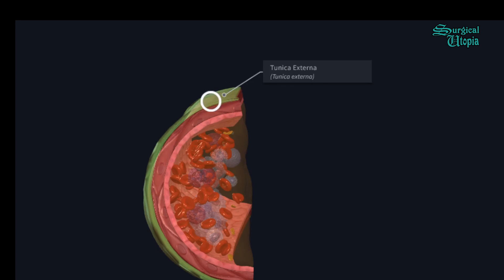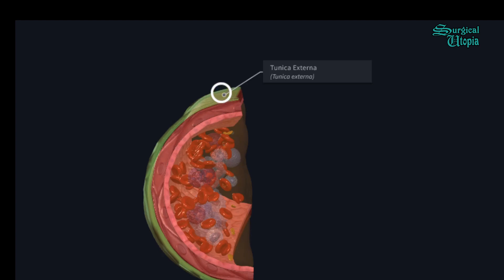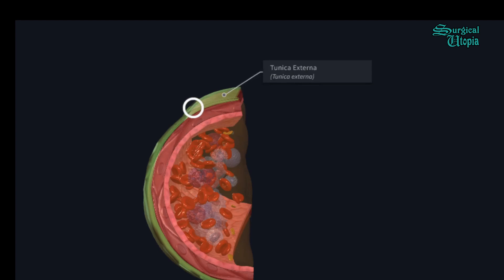It also contains a network of autonomic nerve fibers called the nervi vasorum, which is responsible for vasodilation and vasoconstriction of this layer. This outermost layer also serves to keep the blood vessel in place in the body tissue by anchoring it at a particular location.